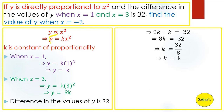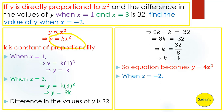We substitute k = 4 back into the equation, so our equation becomes y = 4x squared. Now for the last part: we find y when x = minus 2. Substituting, y = 4 times minus 2 squared. Since minus 2 squared equals positive 4, y = 4 times 4, which simplifies to 16. So the value of y when x = minus 2 is 16.